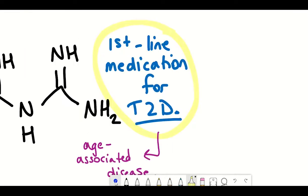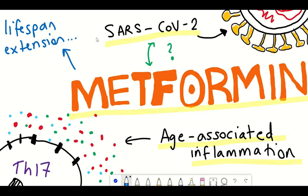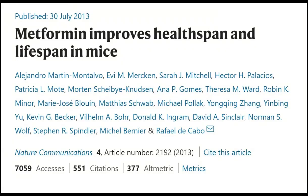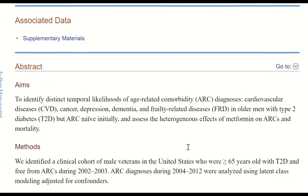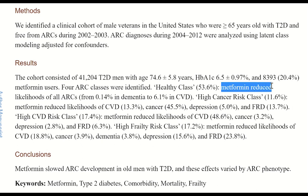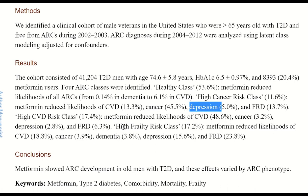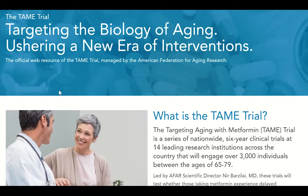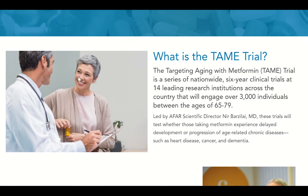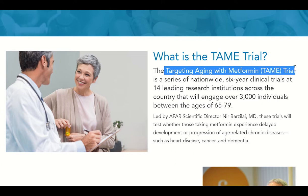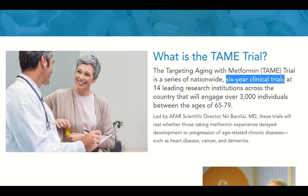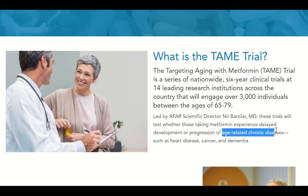Metformin has become even more of interest recently because studies have shown it can extend lifespan in mice. Also, as explained in one research article, older men who had been taking metformin for type 2 diabetes had a reduced likelihood of getting dementia, cancer, depression, and cardiovascular disease. These are all age-associated diseases, and so what has been initiated is the Targeting Aging with Metformin trial — a nationwide six-year clinical trial at 14 different research institutions assessing the efficacy of metformin in preventing these age-associated diseases.